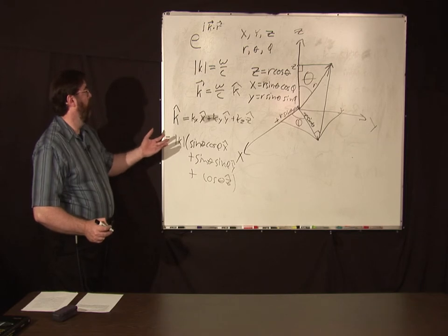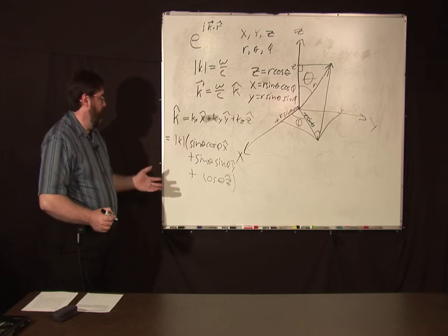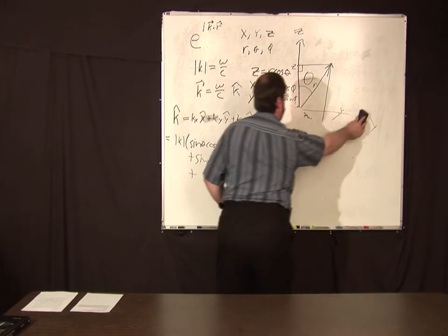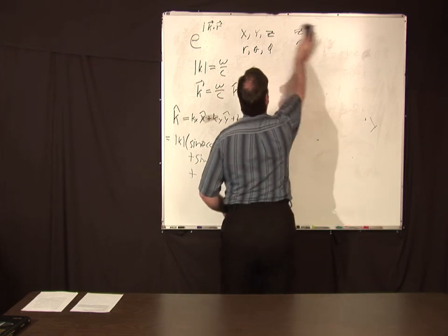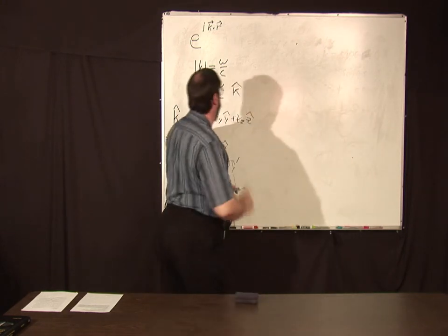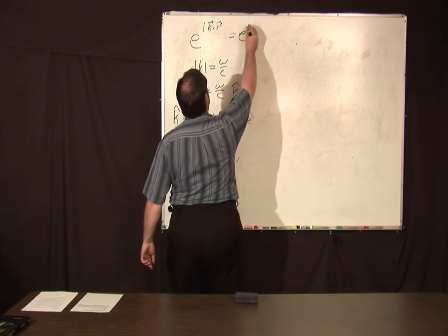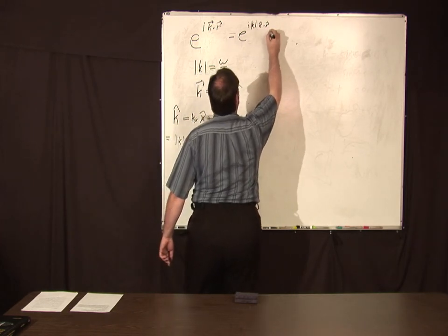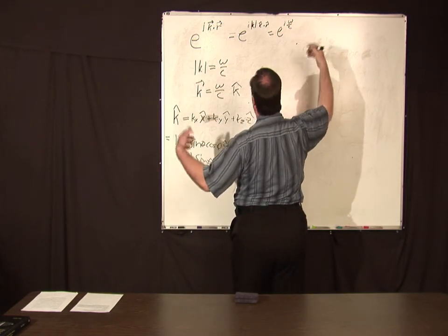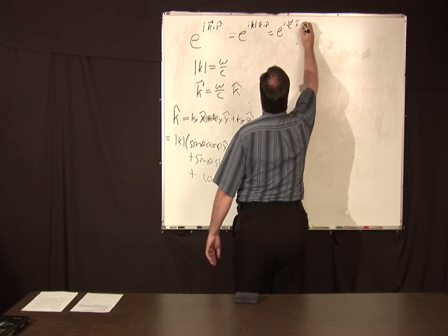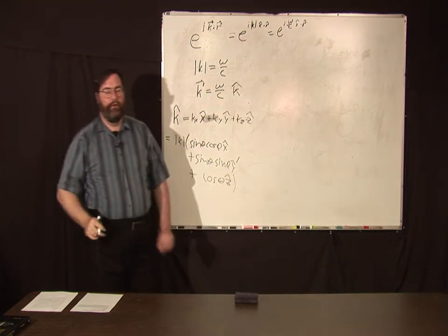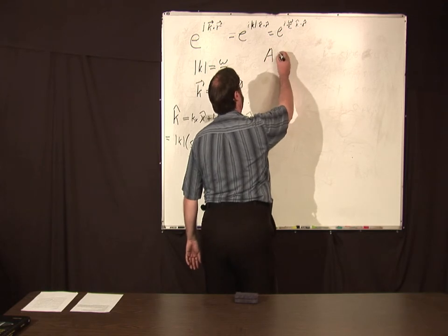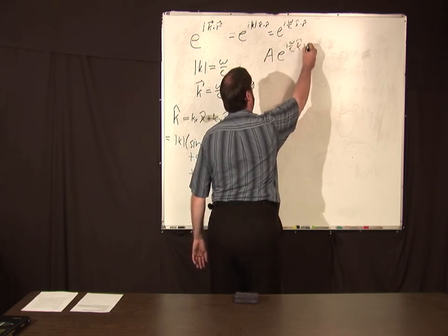So we can now go back and forth between spherical and Cartesian coordinates. General plane wave then, which also is equal to e to the i magnitude of k times k-hat dot r, which in this case we know is e to the i omega over c, or 2 pi over lambda, or whatever expression you want to use, k-hat dot r. k-hat represents the direction the wave is going. Or in general, the plane wave is some amplitude times e to the i omega over c k-hat dot r.